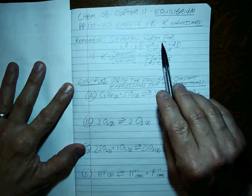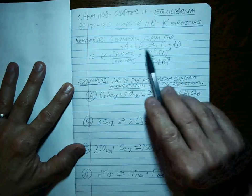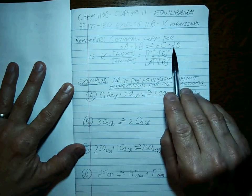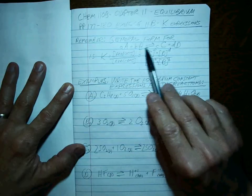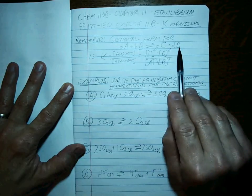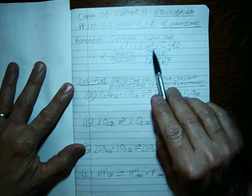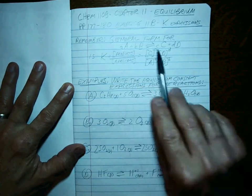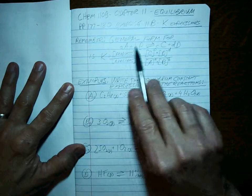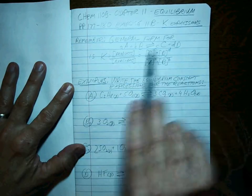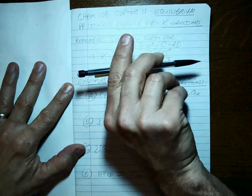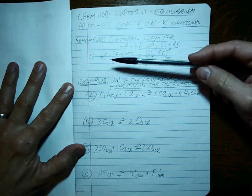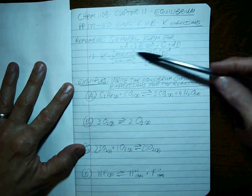the general form for any general reaction where the little a's here are the coefficients, the big letters are the reactants and the products, and that is the equilibrium sign, which means at any one time the reactants are reacting in this direction to make the products, and then at the same time the products are recombining to go back